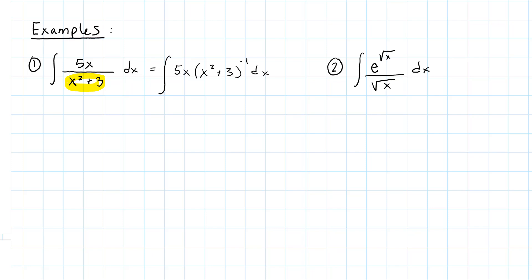I might not actually write it that way, but I'm thinking about it because now I can see an inner function. Remember, substitution allows us to find an antiderivative for something that came from the chain rule — a composition with an inner function and an outer function. When identifying our u, we're looking for what that inner function could have been.